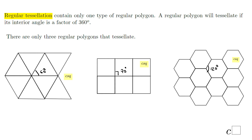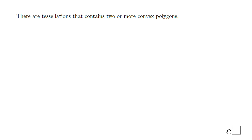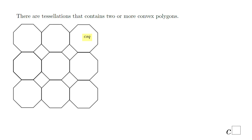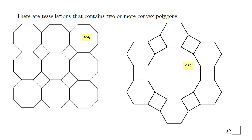However, there are tessellations that contain two or more regular polygons. For example, an octagon and a square can tessellate together. Another example uses three regular polygons: a dodecagon (12 sides), a square, and a hexagon — creating a beautiful tessellation pattern.